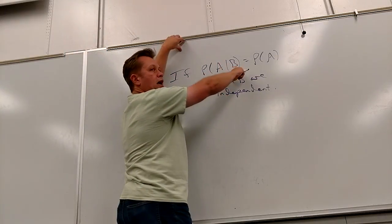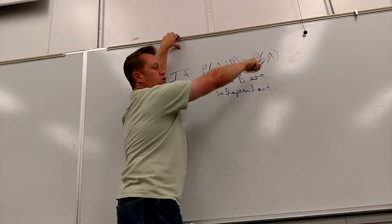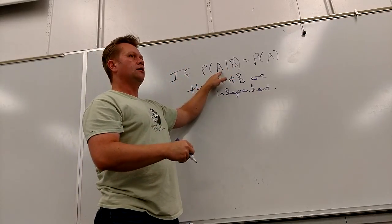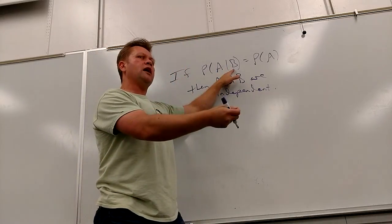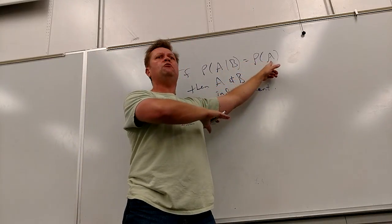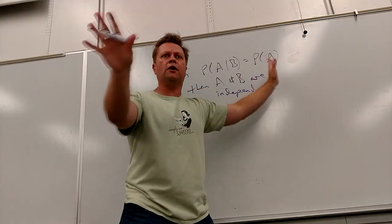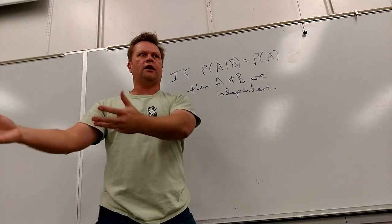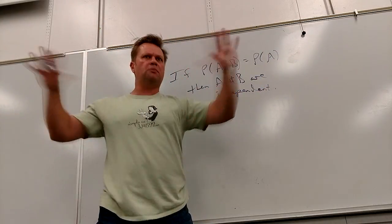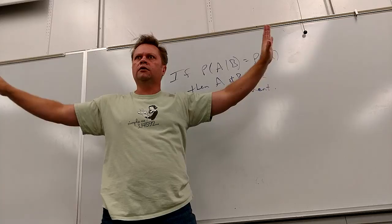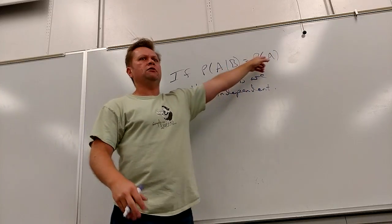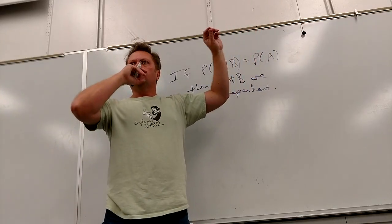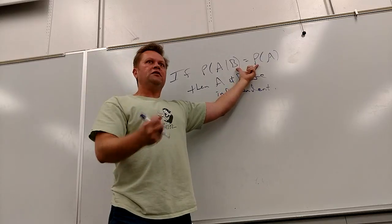Given that B happened, if it's the same as what the probability of A was anyway, then obviously A doesn't care that B happened — they're independent from each other. If these two are different, then A cares that B happened because it changed.